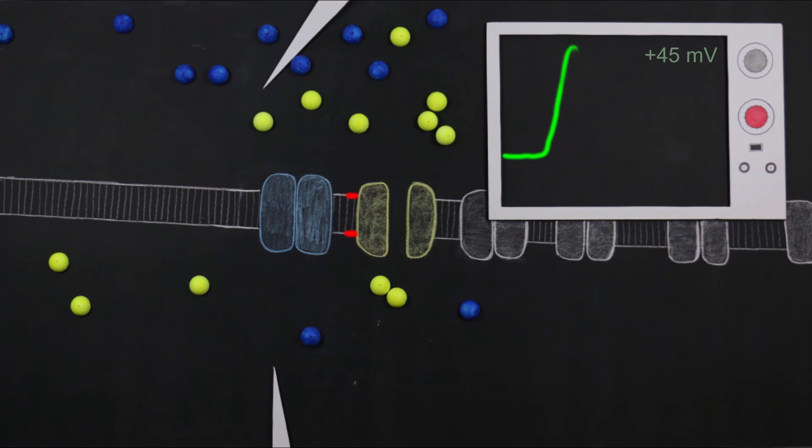But the potassium channels are still open, so potassium continues to leak through the membrane. This is the beginning of the repolarization phase of the action potential.